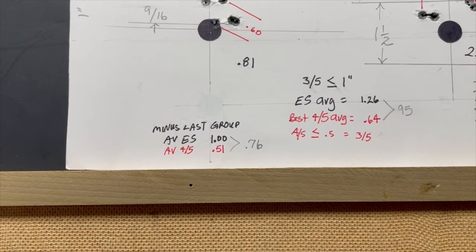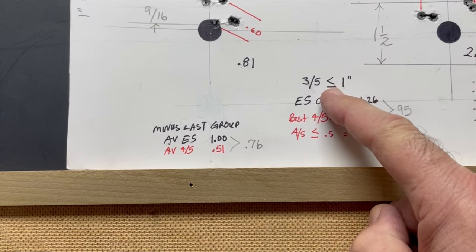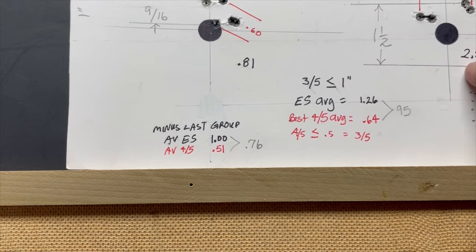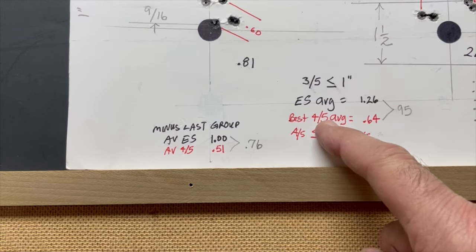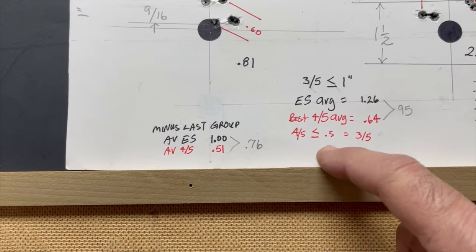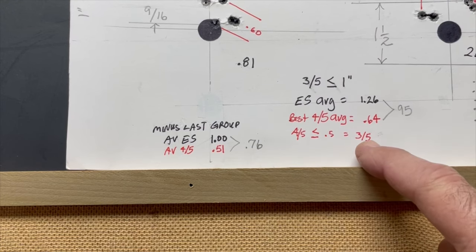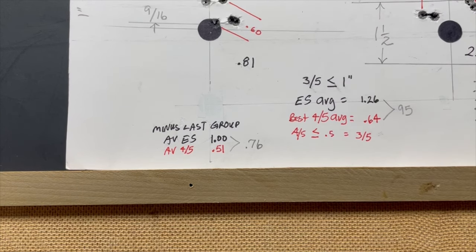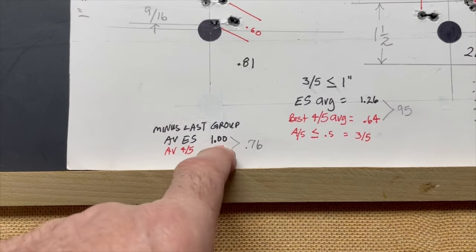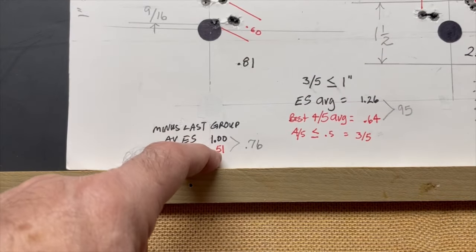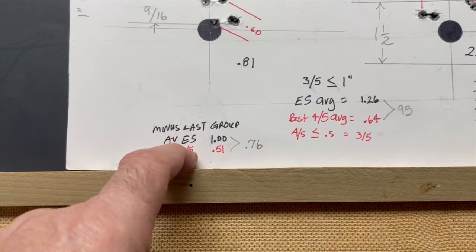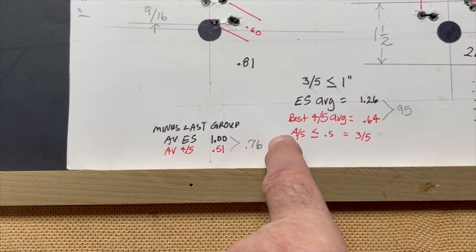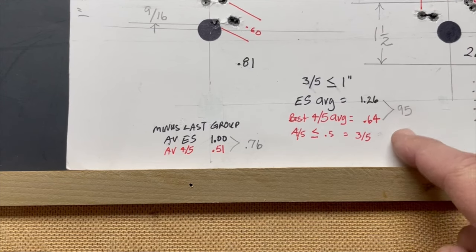But in any event, I had three out of five that grouped at an inch or under. The extreme spread average of all five targets, including this crappy one at 2.29 inches, was 1.26. The best four out of five averaged 0.64. And then as far as how many of the four out of five grouped under a half an inch, three out of five grouped the best four out of five under a half an inch. And then just out of curiosity, if I was to back out that last group, my average extreme spread, including this crappy group at 1.35, would be 1.0, with the best four out of five at 0.51. And that, if you average those two numbers together, your extreme spread and your best four out of five, that gives you a score of 76. Whereas with group number five, that gives me a score of 95.